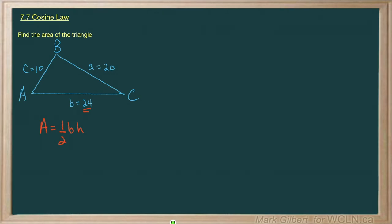But we don't know what the height is. The height of the triangle is right here. So in order to find that, we need two things. Actually, if we had angle A or angle C, we could use right-angle trigonometry to find the height. So let's do that.